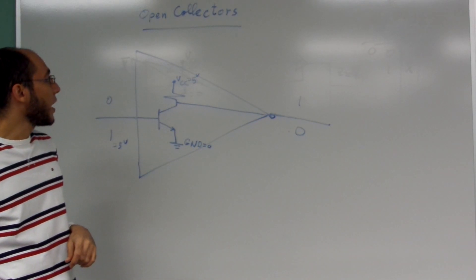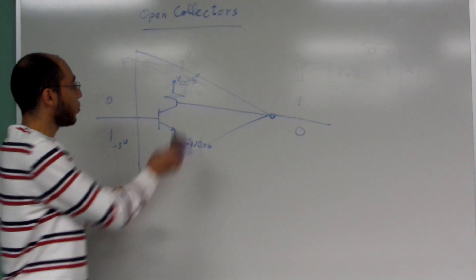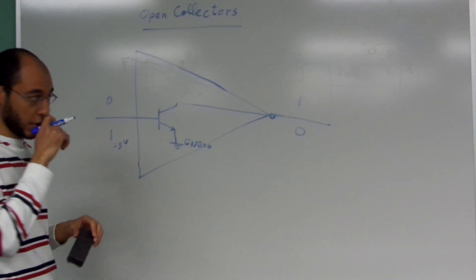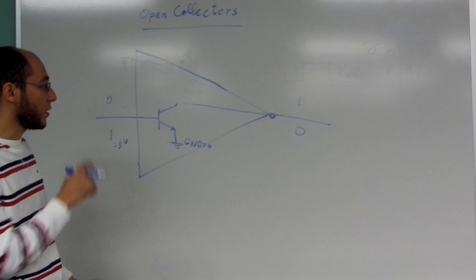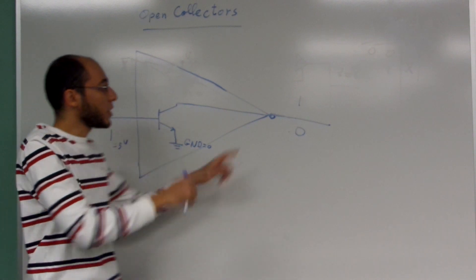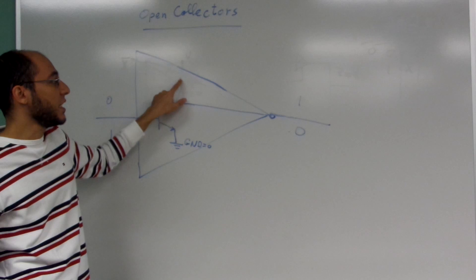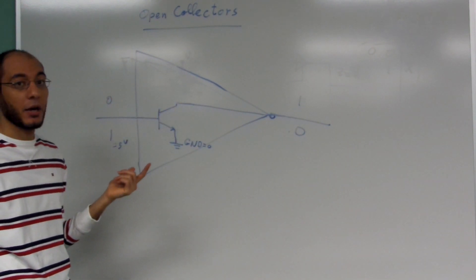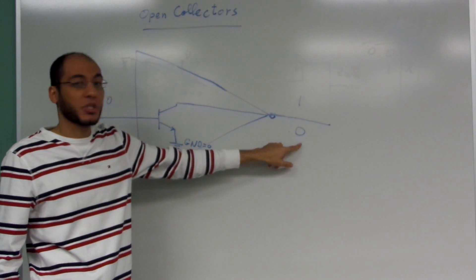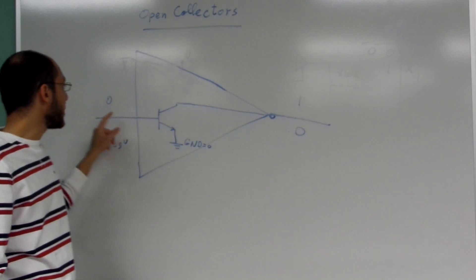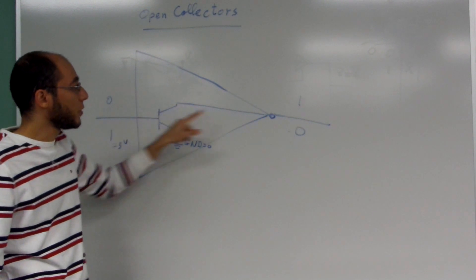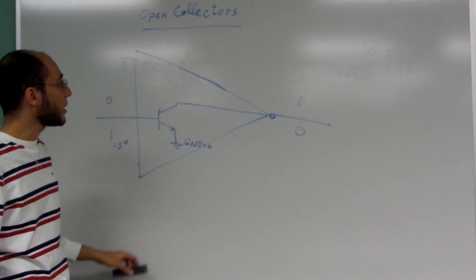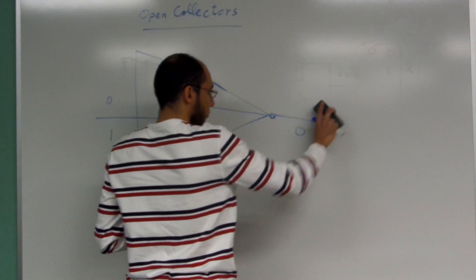With an open collector NOT gate, this is how it looks — and this is why we have a problem. Whenever we have a zero input, we want a logic one at the output. But how would that logic one come out if no VCC is connected internally? You cannot expect five volts to appear. If you have a logic one input, you'd get logic zero at the output because zero comes from the ground. But with a logic zero input, where would the circuit get the five volts from? It would not have it.